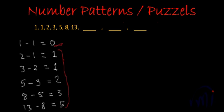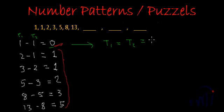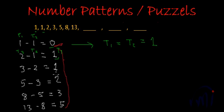So let's see these differences separately and check what our series can be. If we see the first difference, this was term 1 and this was term 2, and both were equal. So from here we can see term 1 is equal to term 2, which is equal to 1 — both terms are 1. And if we talk about the second difference, this was term 3 minus term 2, and we are getting the difference as term 1. This was the very first term of the series.